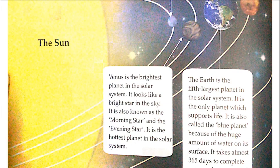Second is Venus. Venus is the brightest planet in the solar system — it looks like a bright star in the sky. It is also known as the morning star and the evening star. It is the hottest planet in the solar system — sabse garam planet hai kyunki yeh second number par suraj ke nazdik hai.